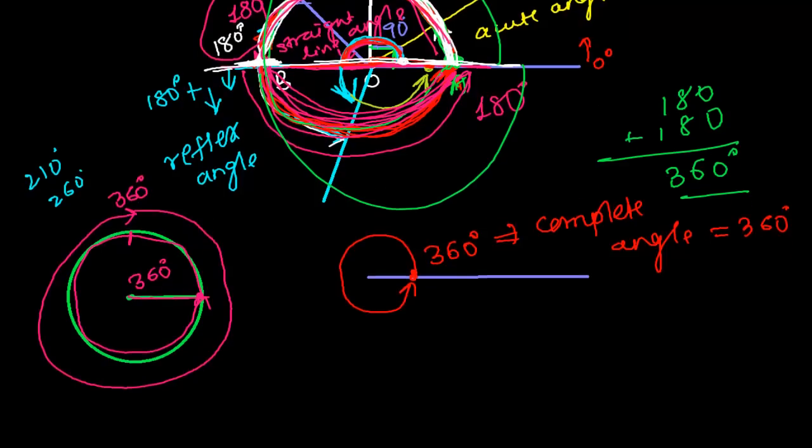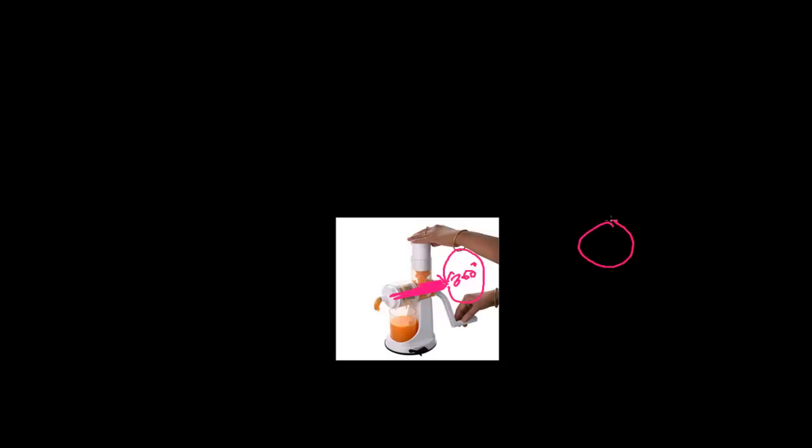Here is a very good real-world example: here is a hand juicer, and here is a lady trying to make some juice — maybe orange juice. The center part is called the axle or axis of rotation. When she rotates the juicer, she goes around like this and completes a full circle. Around this axle, she covers 360 degrees — one complete rotation.